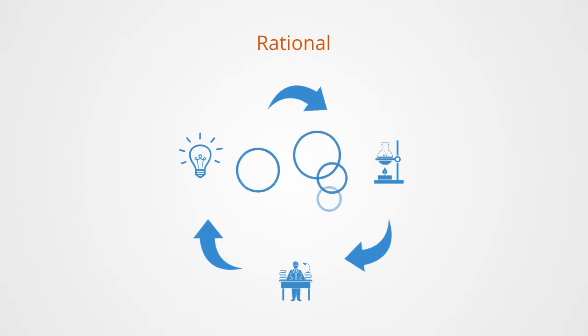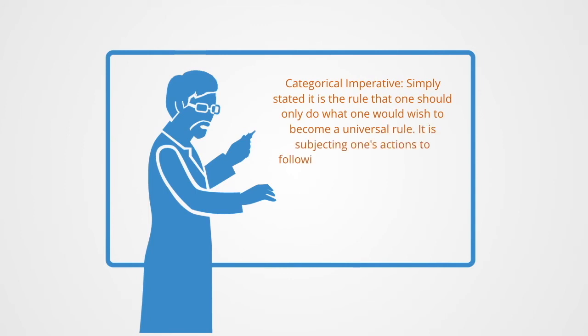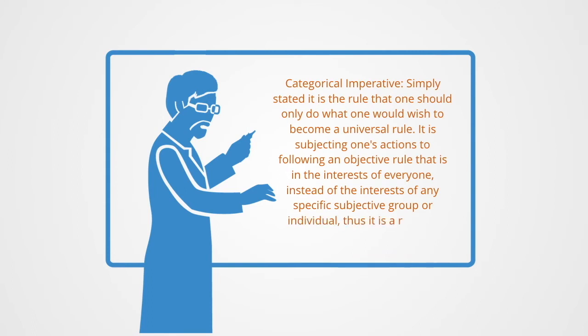Rational means to subsume the particular under general rules based upon reason. In the case of political institutions, this means to subsume the specific particularities of any group under general rules defined by all or rules designed to be in the interests of all. In order to do this, it must be that all are equal before the political institutions which then determine eventualities based upon a set of rules derived from reason-based discourse. What we call the categorical imperative is one example of a rational moral system. Simply stated, the categorical imperative is the rule that one should only do what one wish to become a universal rule. This is subjecting one's actions to following an objective rule that is in the interests of everyone instead of the interests of any specific subjective group or individual. Thus we can say it is a rational moral code.